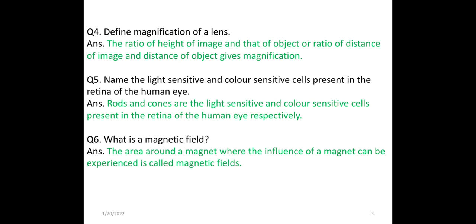Question 5: Name the light-sensitive and color-sensitive cells present in the retina of the human eye. Rods and cones are the light-sensitive and color-sensitive cells present in the retina of the human eye.